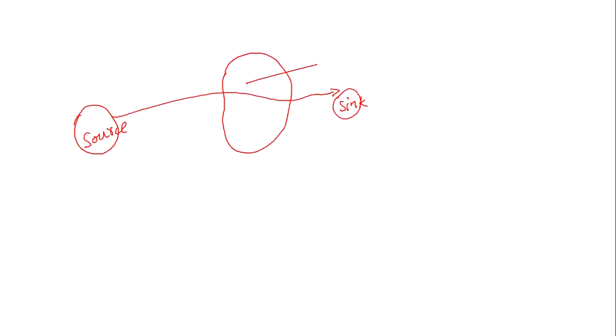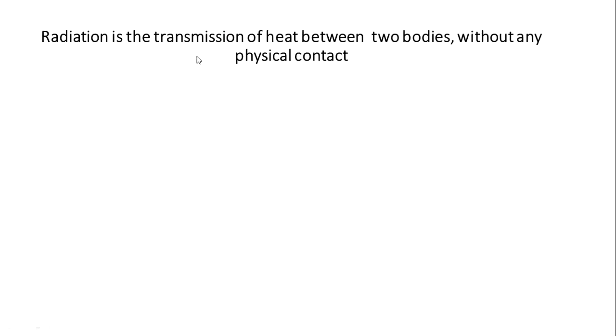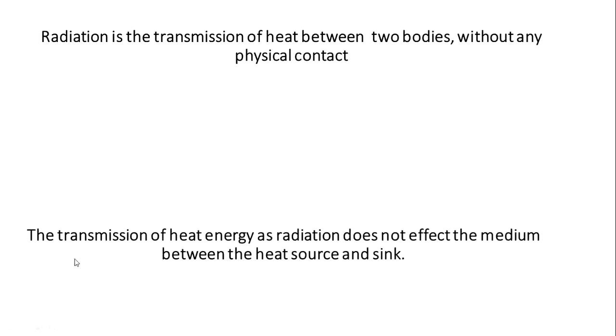Let me explain what we mean by radiation first and foremost. Radiation is the kind of heat transfer from the source to the sink with or without the medium. While transferring heat from the source to the sink, it won't disturb the medium, it won't heat up the medium — it just transfers heat in the form of electromagnetic waves. That is what we call Radiation Heat Transfer. Radiation is the transmission of heat energy between two bodies with or without physical contact, and it does not affect the medium between the heat source and sink.